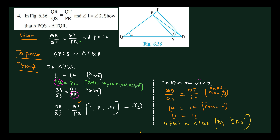So given: QR by QS equals QT by QR. And also given that angle 1 is equal to angle 2. We need to prove triangle PQR is similar to triangle TQR.